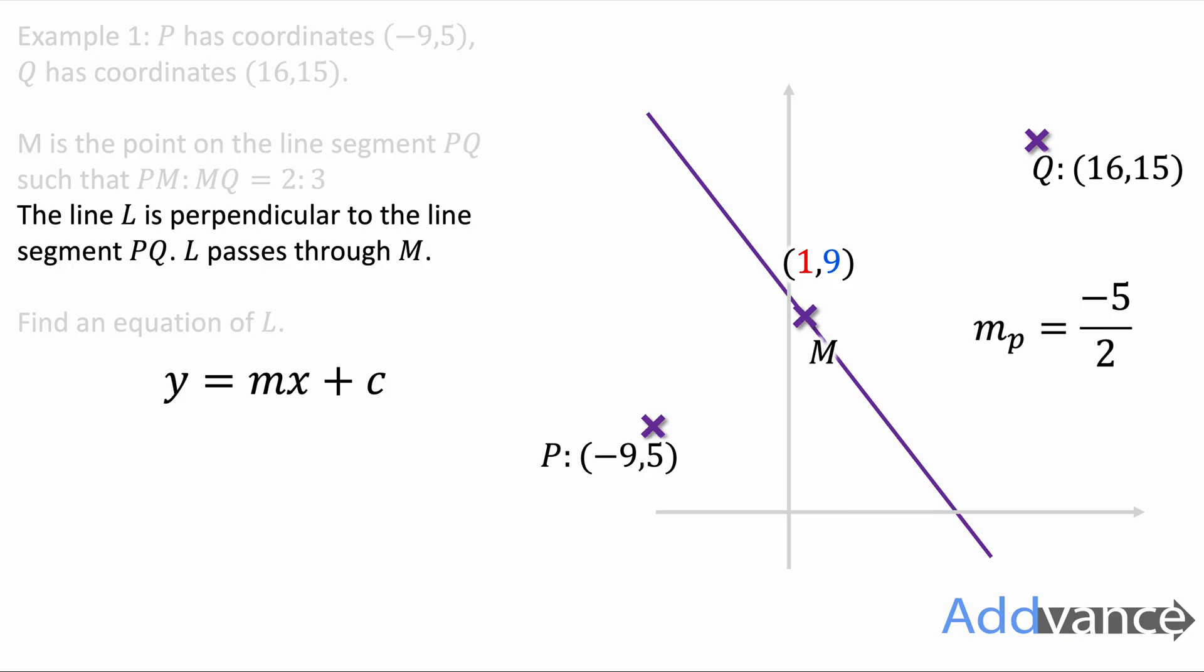Now we want a line that has that gradient. So we're going to do y = mx + c and substitute the gradient in. Now we also want it to go through (1, 9) so substitute 1 and 9 in. When you rearrange and solve this equation you get that c is 23/2. Substitute that back into the equation y = -5/2 x + c. We get the final answer of the line L. We have finished question one.